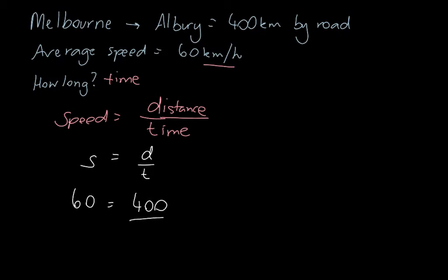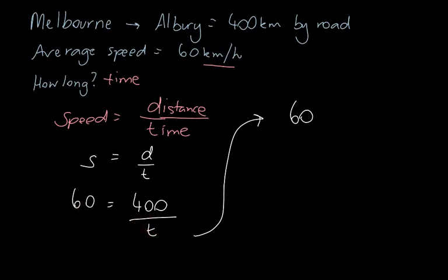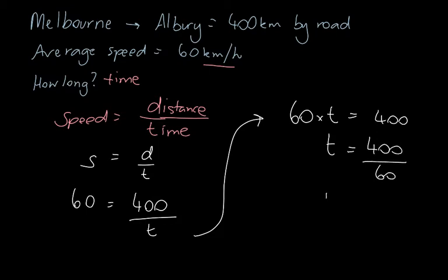The time is the unknown, so we want to get time all on its own. To rearrange: 60 equals 400 over t. Moving the t across — divide becomes multiply — gives us 60 times t equals 400. Now to isolate t, we move the 60 across: times on that side becomes divide on this side, giving us t equals 400 divided by 60.